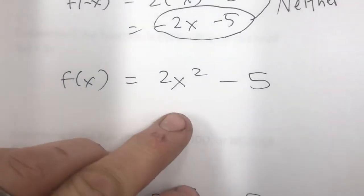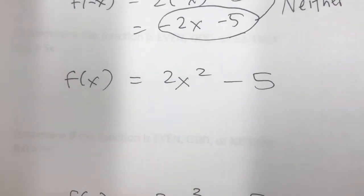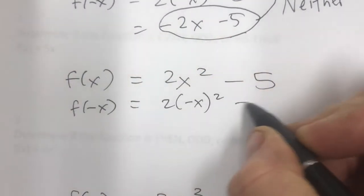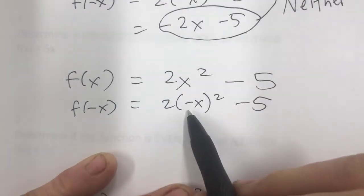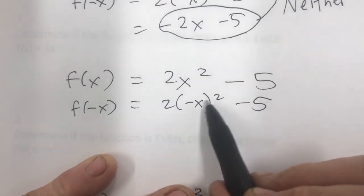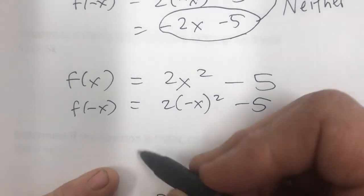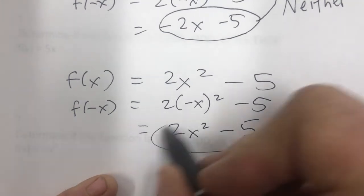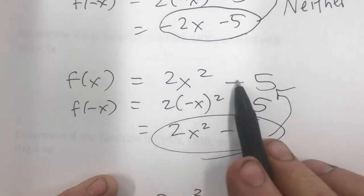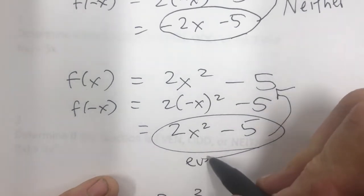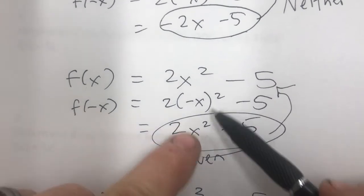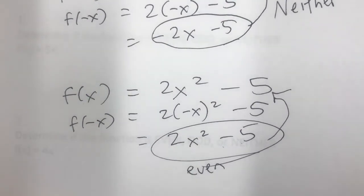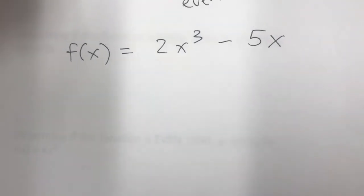Next example: f(x) = 2x² - 5. I'm going to do f of negative x and put negative x in for x. When I square negative x, the negative makes it positive, so I get positive 2x² minus 5. That's the exact same thing as the original function, so this is an even function.